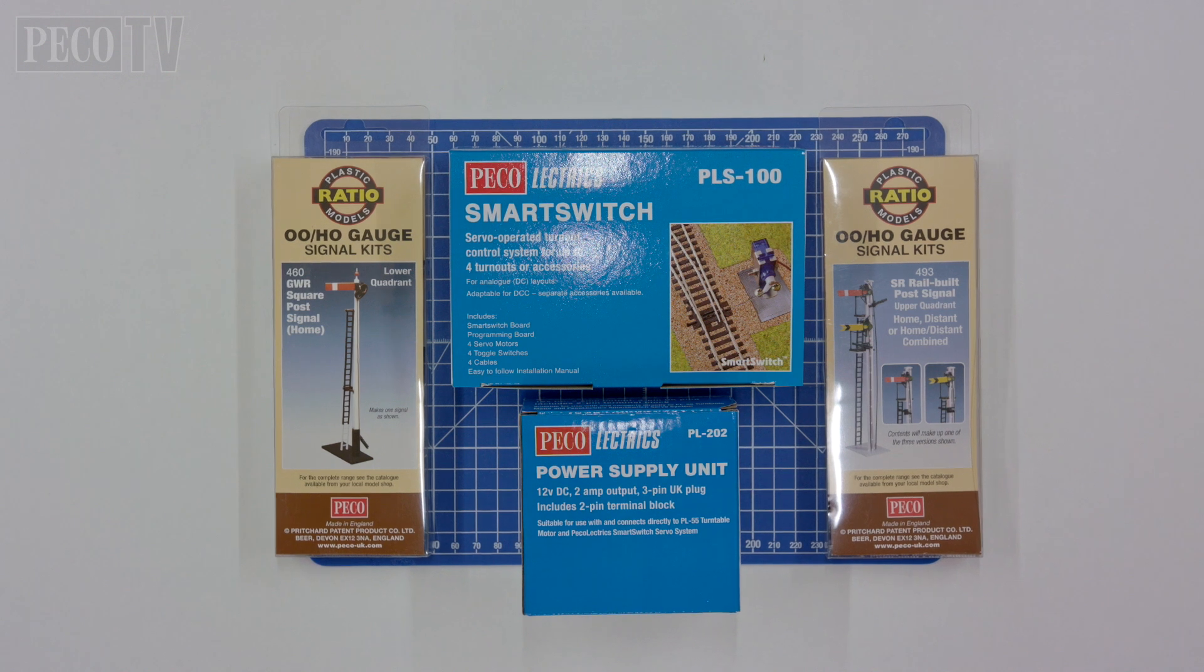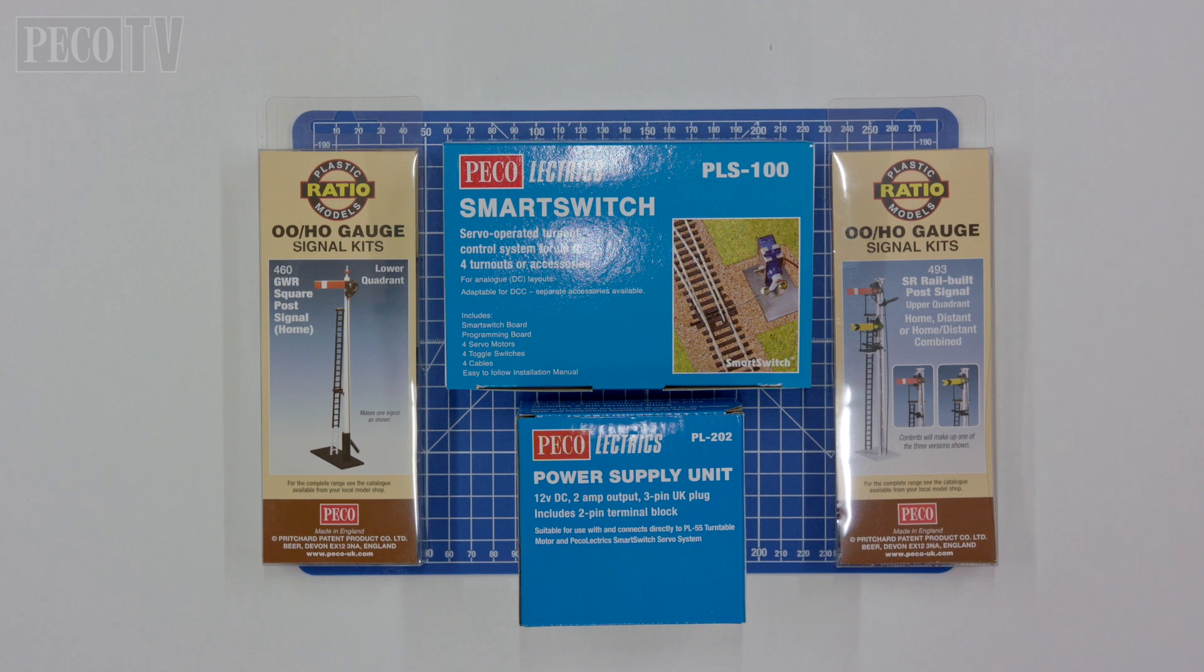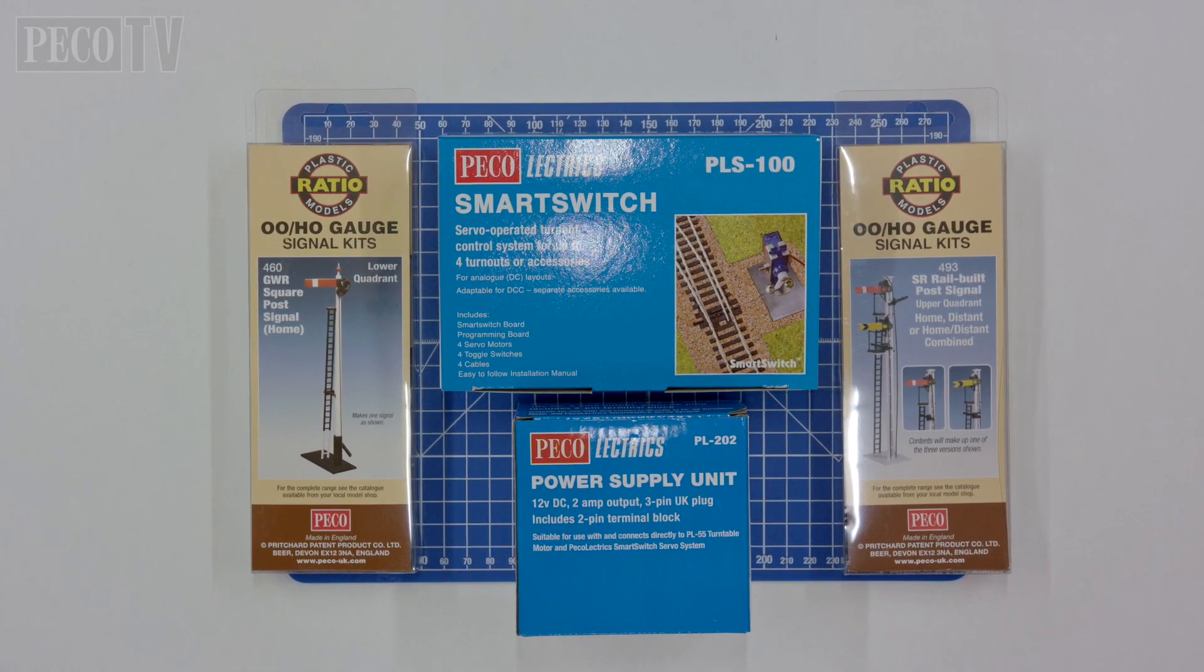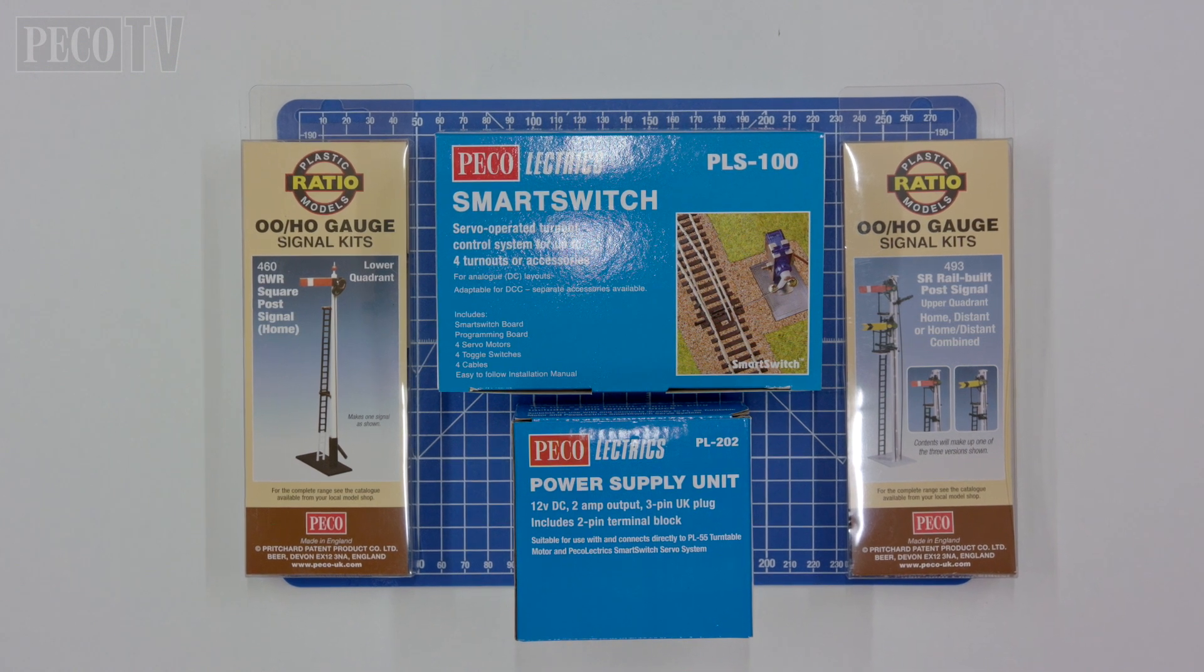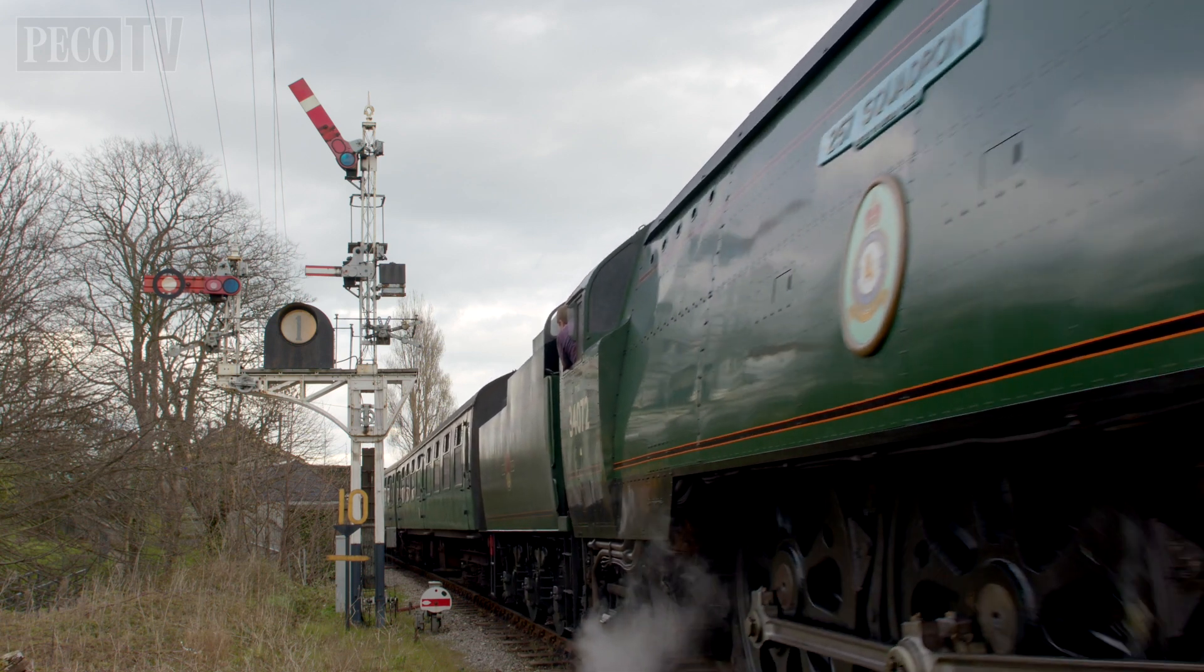We will also be demonstrating the operation of the Ratio 493 SR rail built signal posts with both upper quadrant home and distant semaphore using the Pico smart switch PLS100. But first of all we are going to take a look at the real deal.